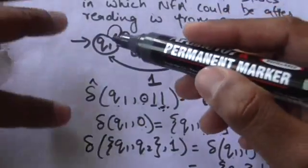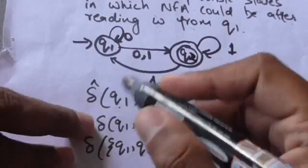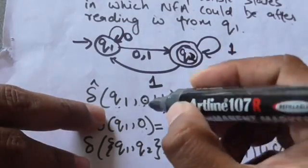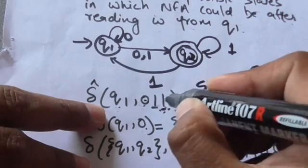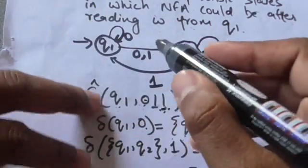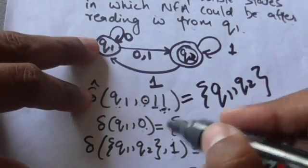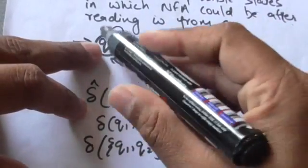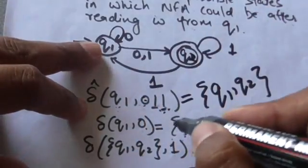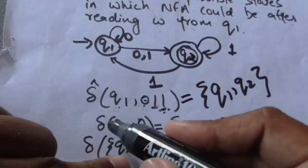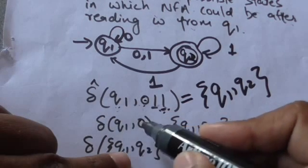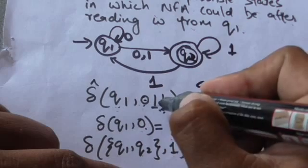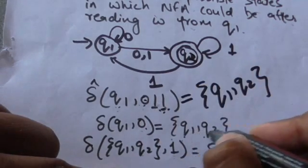Now, consider this NFA. We have to find out the output of the extended transition function for present state q1 and string of input symbols 0 1 1. First of all, we will apply the first input symbol of the string, that is 0, to the present state q1. q1 has two transitions for input symbol 0: it can either go to state q2 or remain in state q1. So the output of the transition function for present state q1 and input symbol 0 will be the set {q1, q2}.